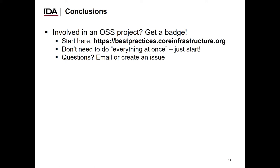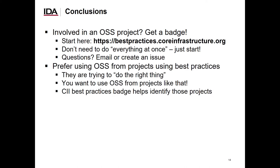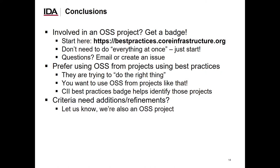In conclusion, are you involved in an open-source software project? If you are, I strongly encourage you to try to get a badge for your project. Simply start at https://bestpractices.coreinfrastructure.org — don't wait until you're ready, just get started and you can see what, if anything, is left to do. If you have questions, send us an email or create an issue using the link at the bottom of every web page. If you're looking at using open-source software, you should prefer software from projects that are applying best practices. The CII Best Practices Badge can help you identify such projects. We've done our best to create good criteria, but nothing's perfect — if you think the criteria need additions or refinements, let us know. The Best Practices Badge project is itself an open-source software project, so we'd love to hear from you.